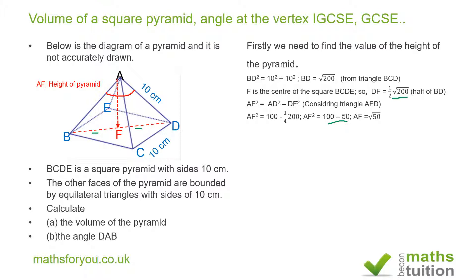So AF squared equals 100 minus 50, which equals 50. Taking the square root of both sides, AF equals the square root of 50. Now that we've found AF, we can find the volume of the pyramid. The volume equals the area of the base — which is 10 times 10 — times the height, the square root of 50, divided by 3.